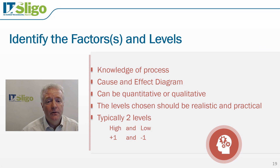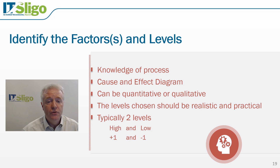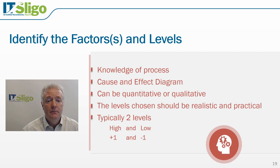We will now look at identifying the factors and their levels. In order to identify the factors and their levels, we need knowledge of the process. This will largely have been gained from our cause and effect diagram, which will have shown which factors require further experimentation. For example, a quantitative factor could be temperature, set to 120 degrees or 100 degrees. A qualitative factor could be the position of a valve — open or closed — or the type of popcorn, whether it's buttered or salted.